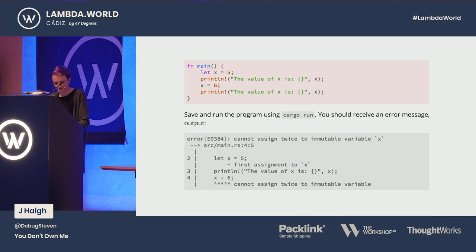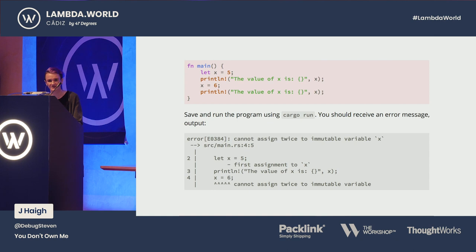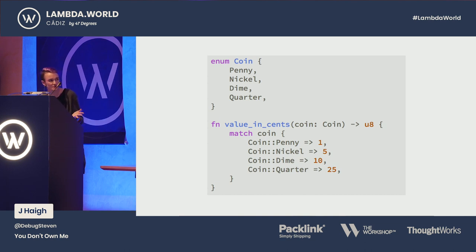Another feature in Rust — from the Variables and Mutability chapter of the Rust Book — if you don't declare a variable with the 'mut' keyword in front of it, like 'let mut x = 5', and you try to reassign it without saying it's a mutable variable, you'll get this error: "Cannot assign twice to a mutable variable x." That's nice. And another thing Rust has is abstract data types and pattern matching. A simple example is an enum with a couple of different variants, and matching on those variants we can say what value those coins have as a U8.